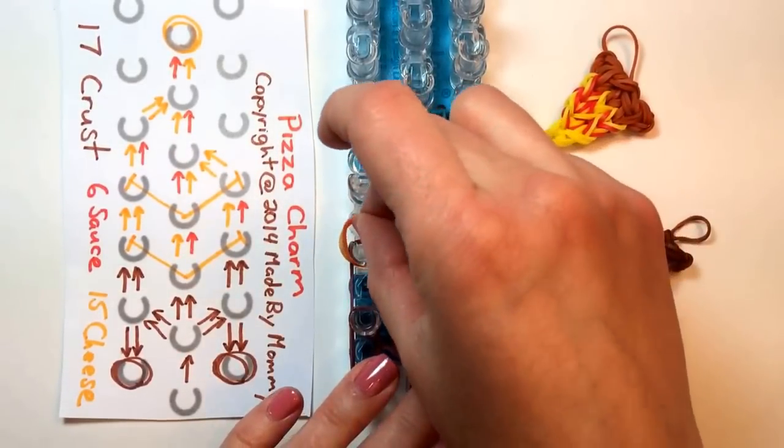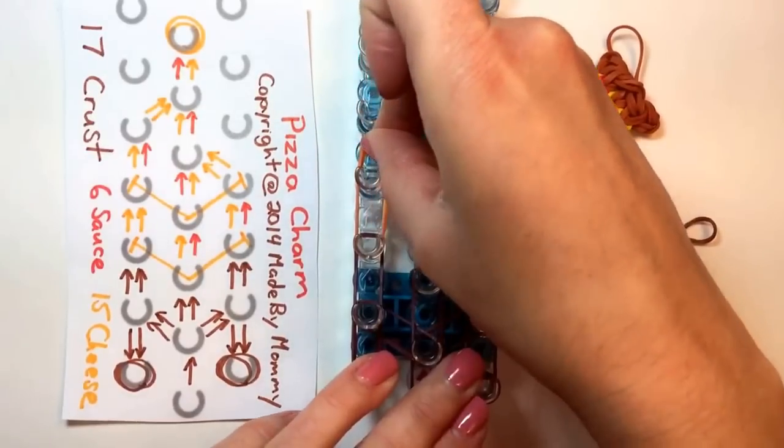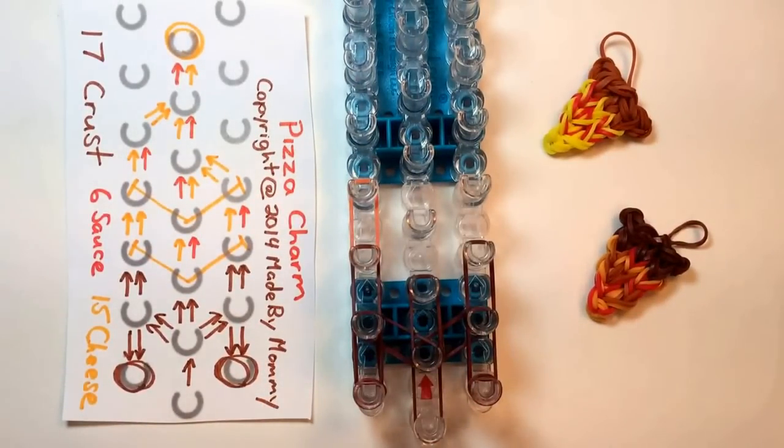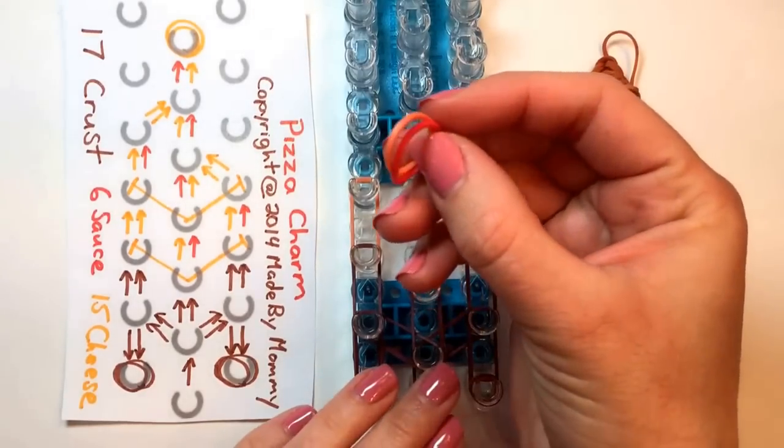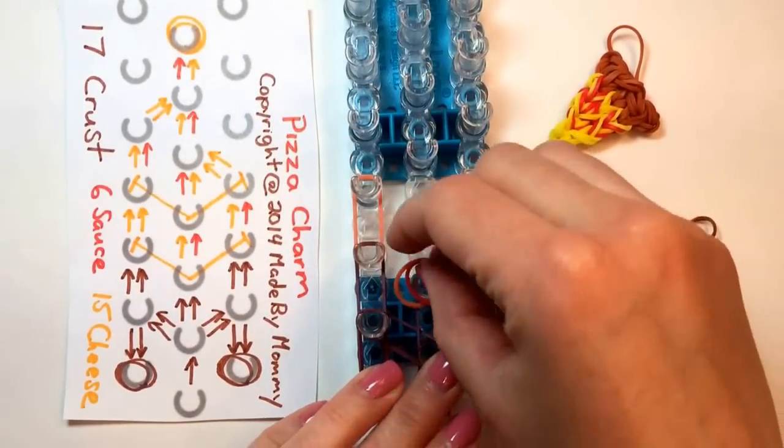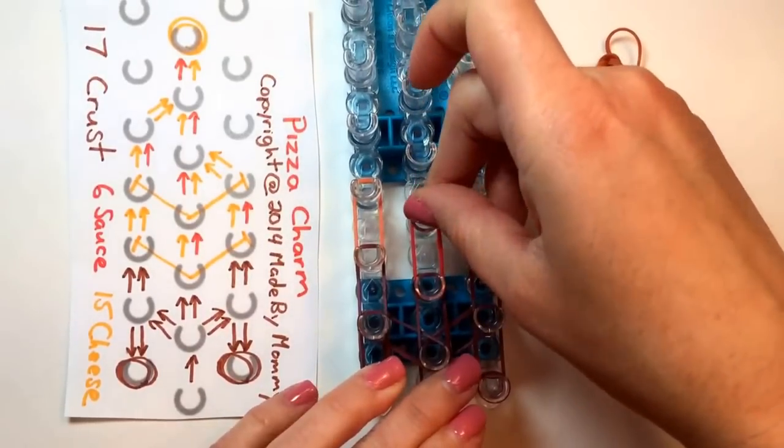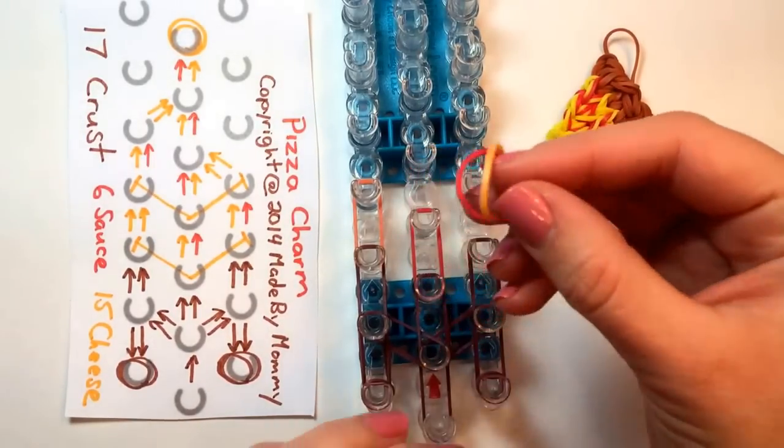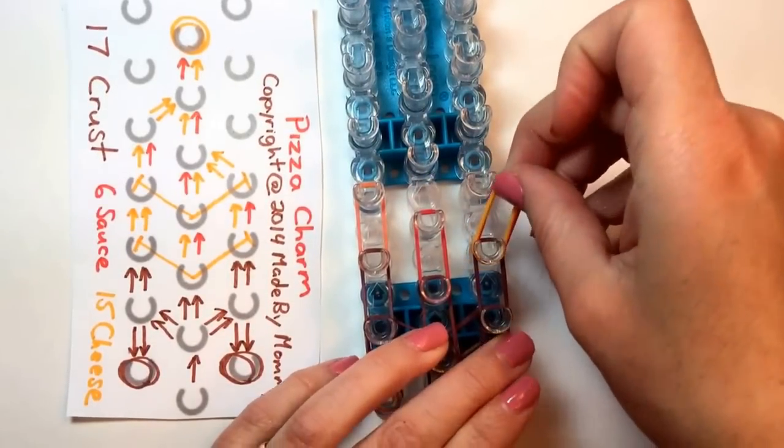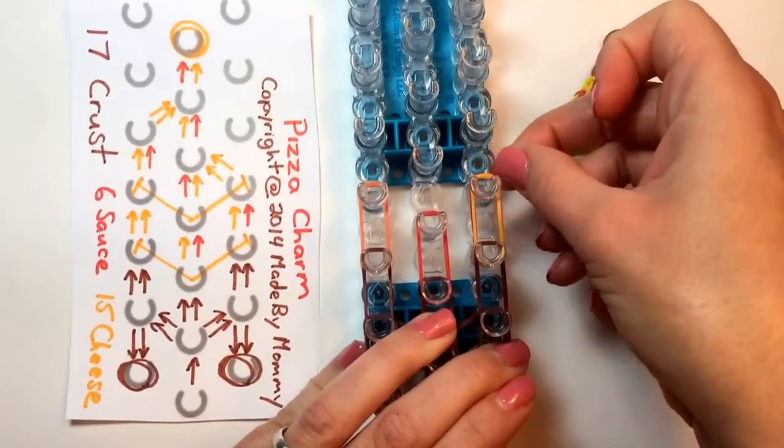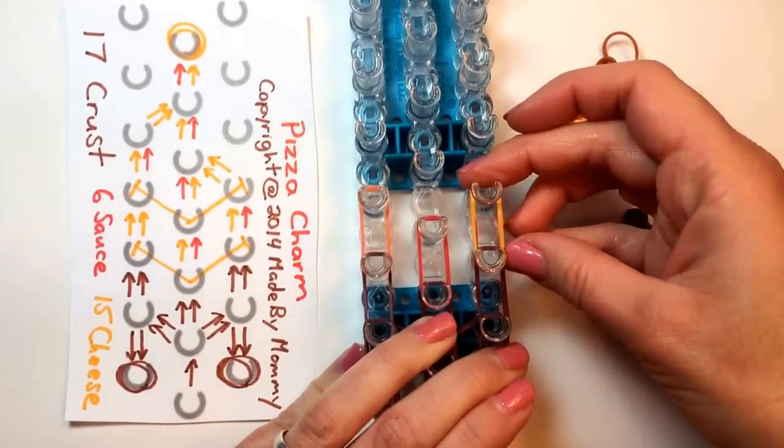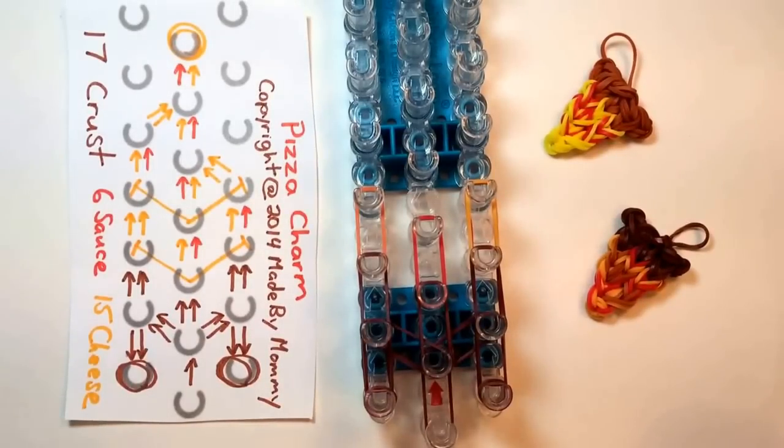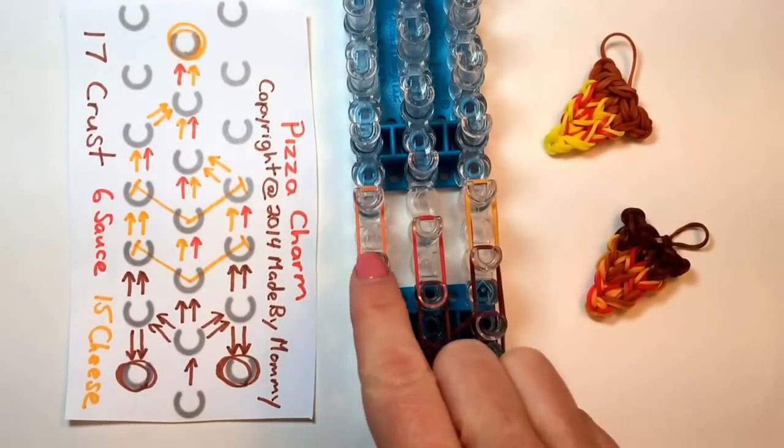Two orange now on the left. And in the middle, we'll start sprinkling in some sauce. So I've got an orange and a red. And I'm going to put another red and orange on the side. Where you put orange, where you put red, it's up to you. It doesn't have to be precise. Every piece of pizza looks a little bit different. So that's your first row of cheese and sauce.